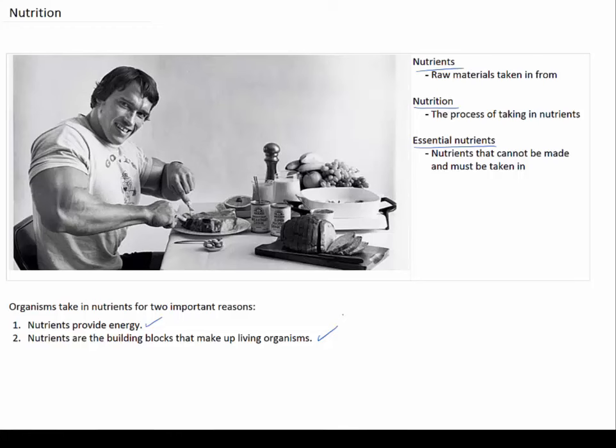The nutritional requirements of an organism are going to vary widely depending on the type of molecules it's made from, its ability to make those molecules from raw materials, its stage of development, its level of activity and reproductive state, and the environment in which it lives.